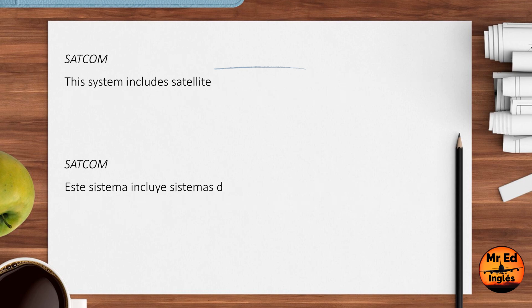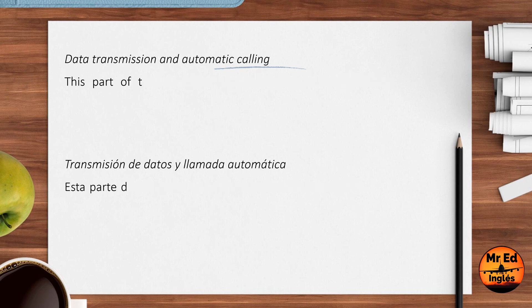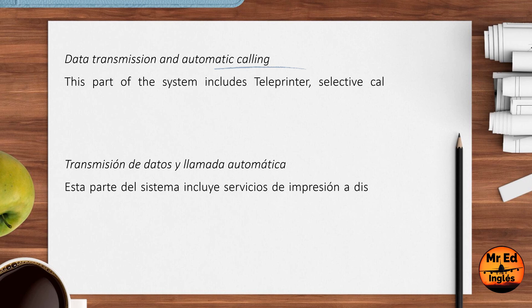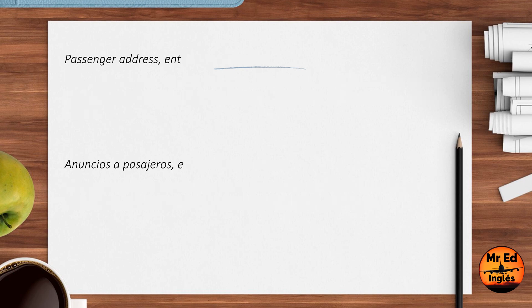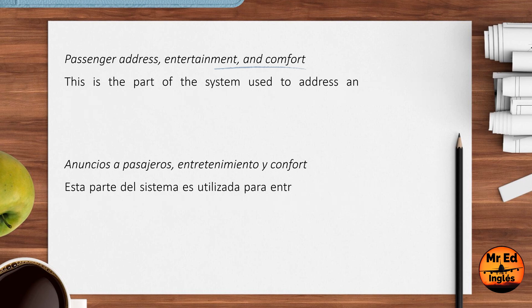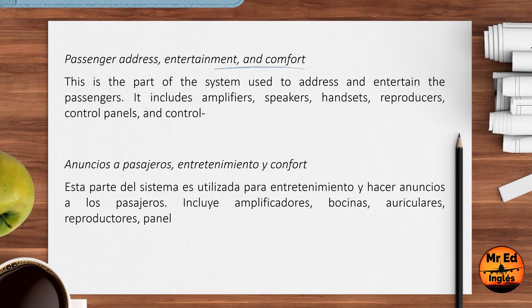Satcom: this system includes satellite communication systems. Data Transmission and Automatic Calling: this part of the system includes teleprinter, selective calling system, and aircraft communication addressing and reporting system. Passenger Address, Entertainment and Comfort: this is the part of the system used to address and entertain the passengers. It includes amplifiers, speakers, handsets, reproducers, control panels, and control units.